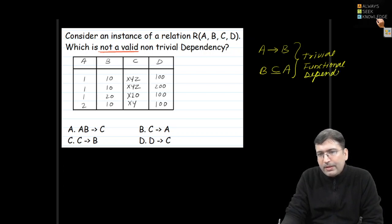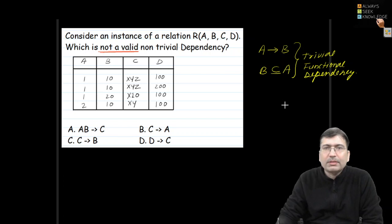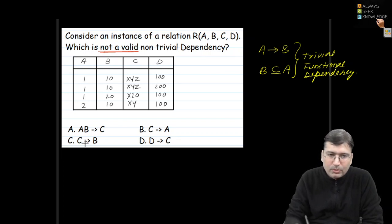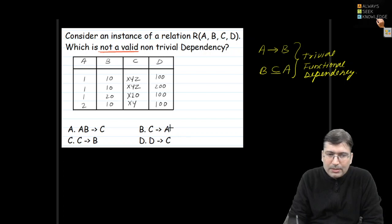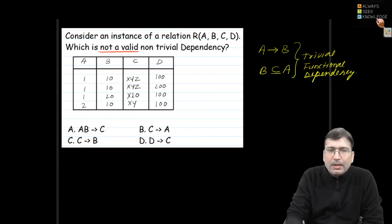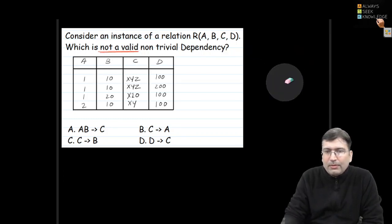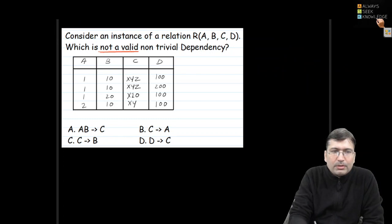We need to identify non-trivial functional dependencies. All the given ones are non-trivial because C is not a subset of AB, A doesn't belong to the subset of C, B doesn't belong to the subset of C, and so on. Now we need to find out which one is not valid out of these.